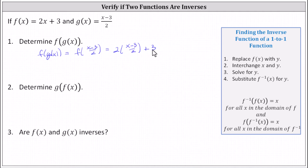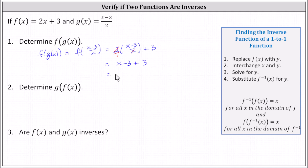This gives us 2 times the quantity x minus 3 divided by 2, plus 3. Now we simplify — writing 2 as 2 over 1, notice that 2 divided by 2 simplifies to 1. Simplifying, we have x minus 3 plus 3, which equals x.